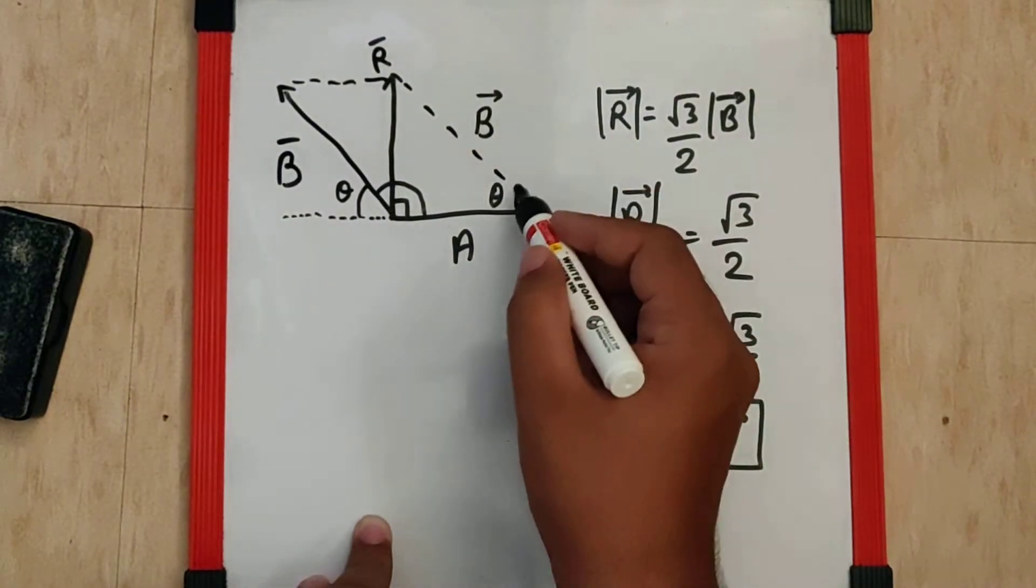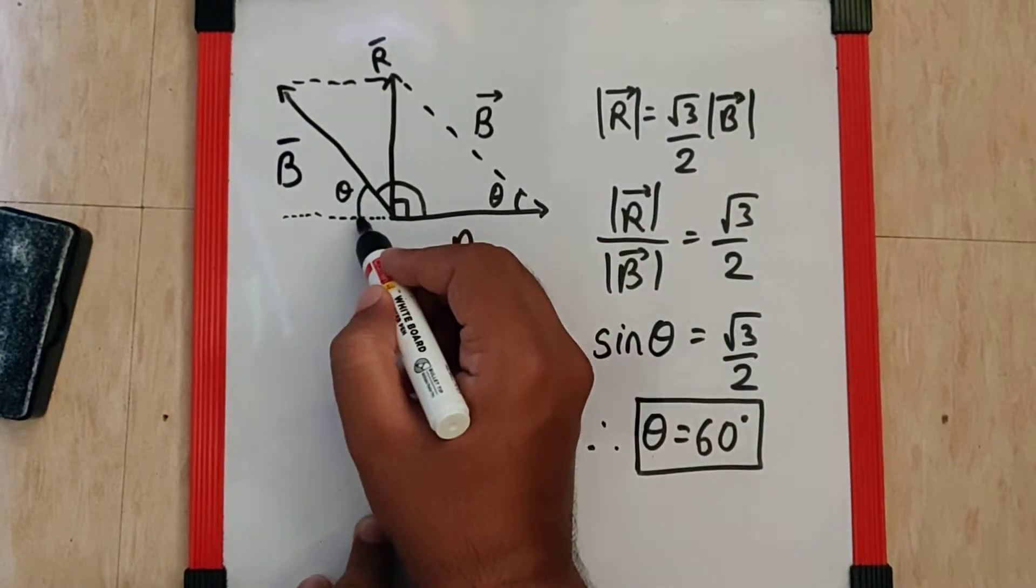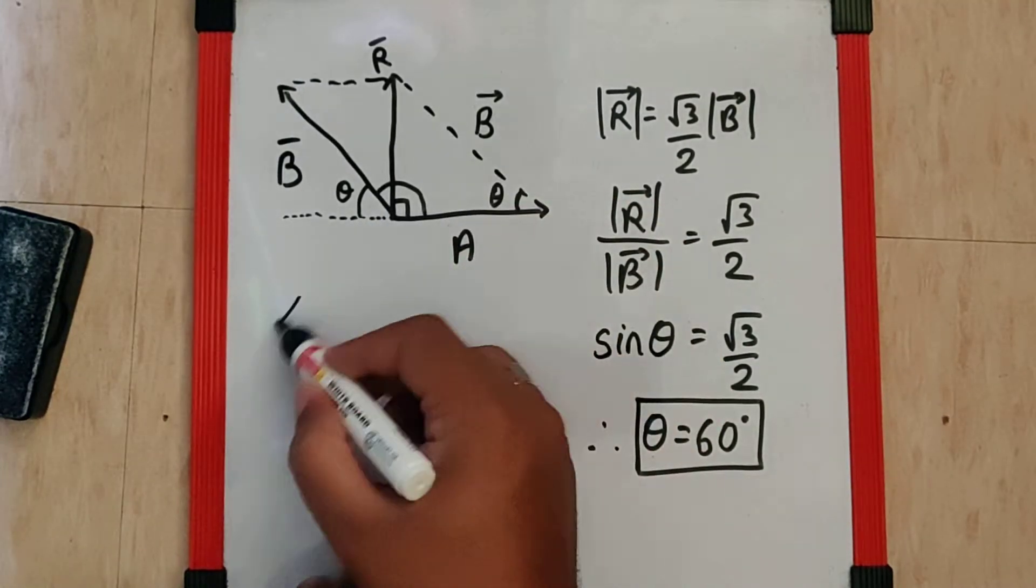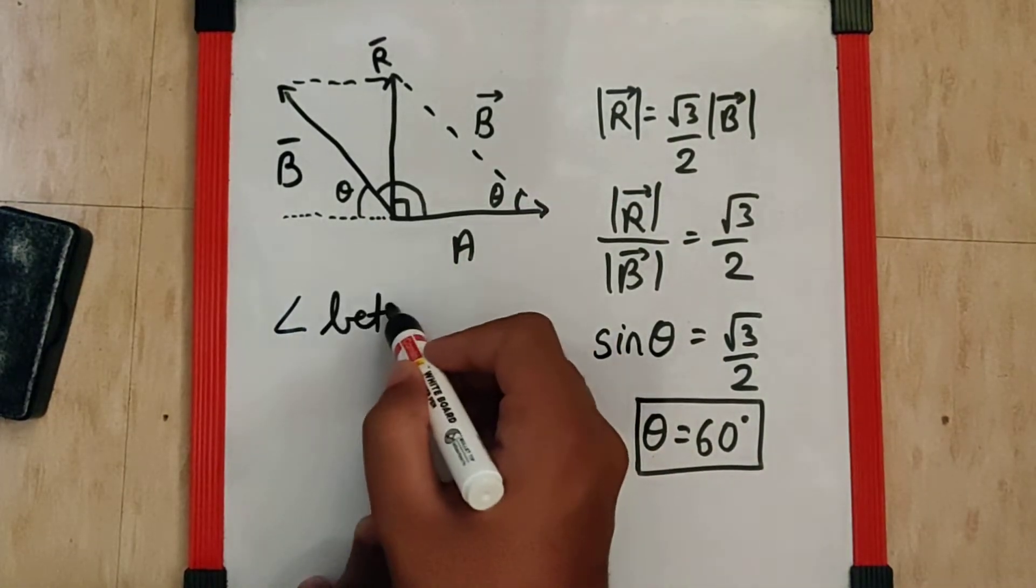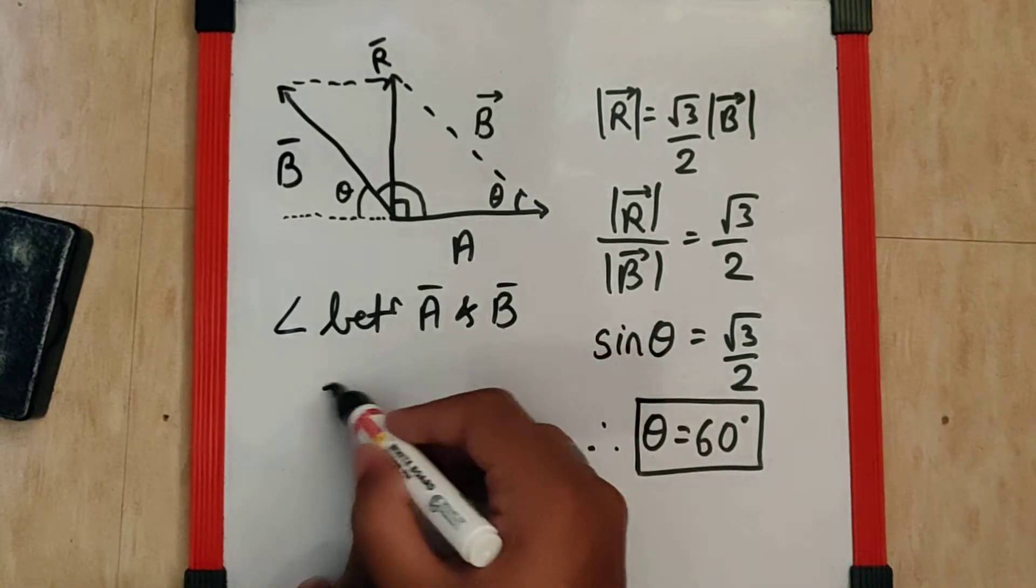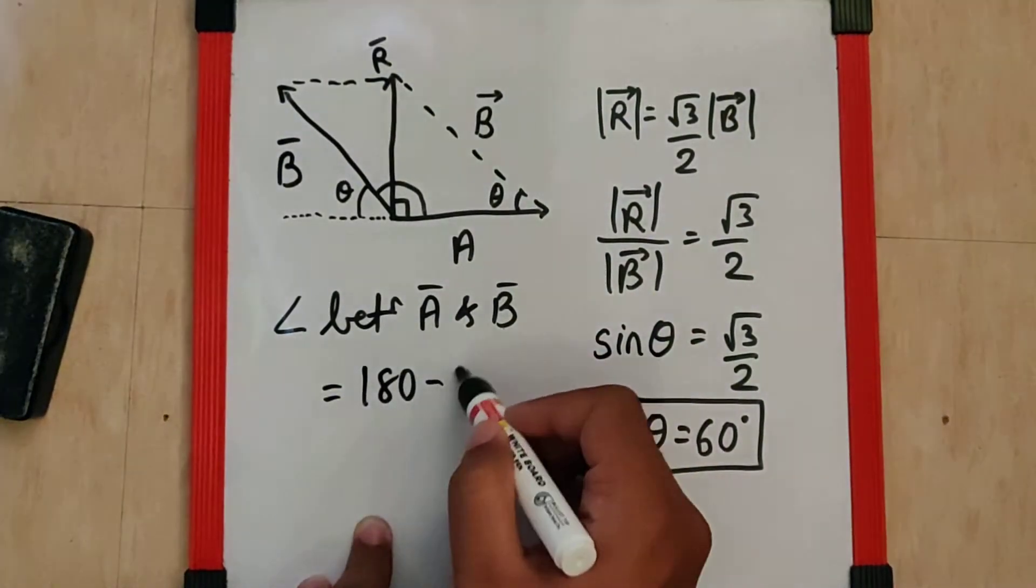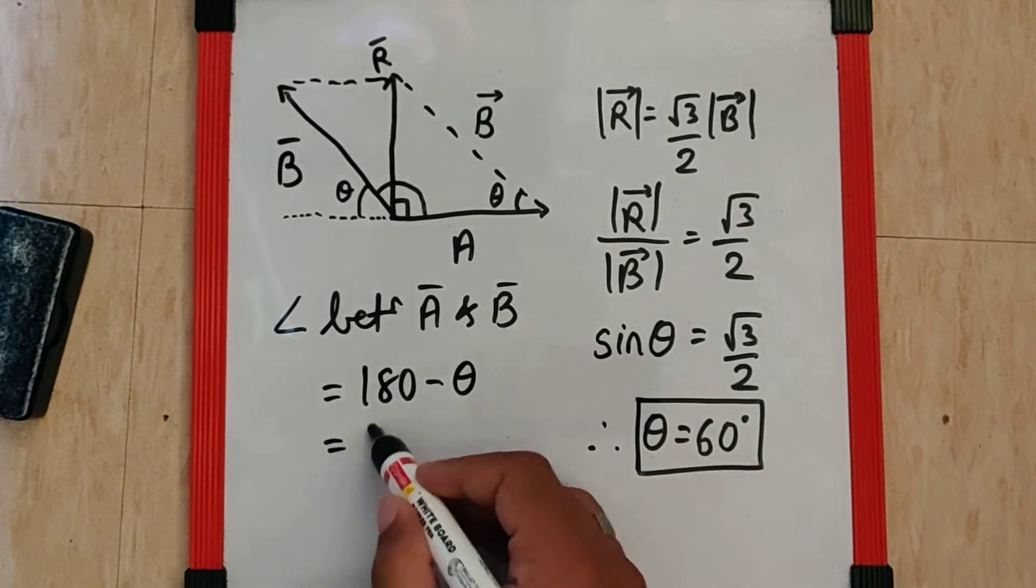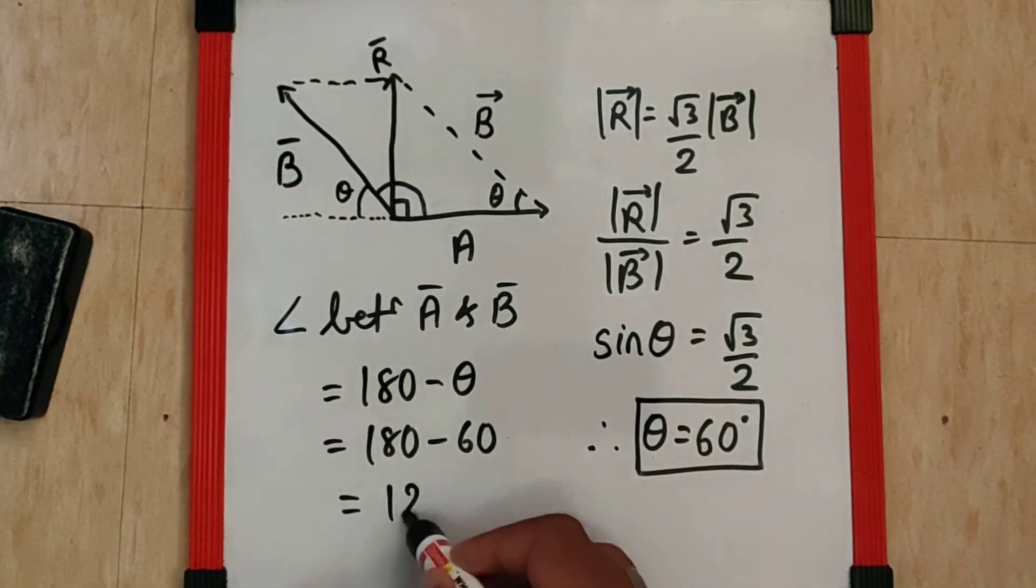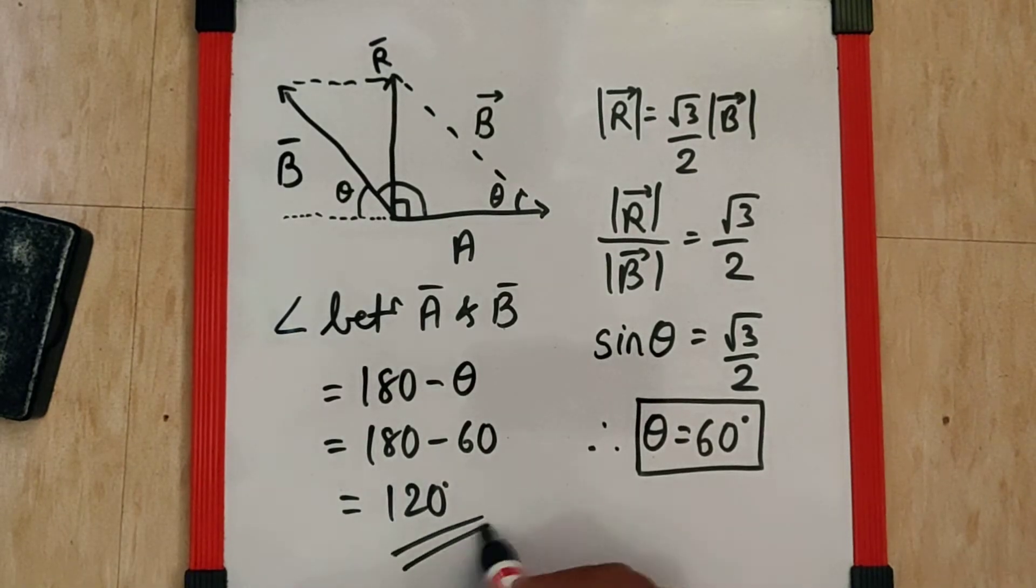Now, if this is 60, this must also be 60. The remaining entire angle, which is the angle between A and B, must be 180 minus theta, which is 180 minus 60, that makes it 120 degrees, which is the final answer.